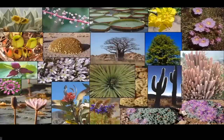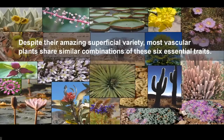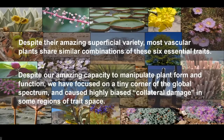To finish, I'd like to share two wider informal corollaries. First, despite the amazing superficial variety, most vascular plants share similar combinations of these six essential traits. And second, despite our amazing capacity to manipulate plant form and function, our deliberate sculpting of phenospace has been focused on a tiny corner of the global spectrum — while at the same time we have been causing highly biased collateral damage in other regions of trait space.